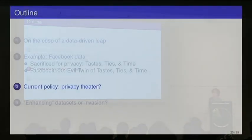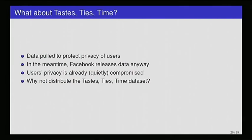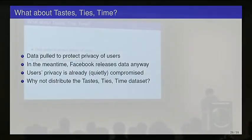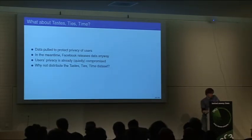There were 1.2 million people's accounts in this Facebook 100 data set, and it probably wouldn't be hard to identify a large number of those. So that puts this Tastes, Ties, and Time data set into context. This data was pulled to protect the privacy of users. In the meantime though, Facebook releases basically the data that's contained in that set anyway. The Harvard network in 2005 is contained in this Facebook 100 data set.